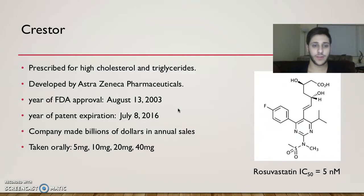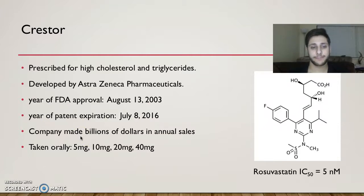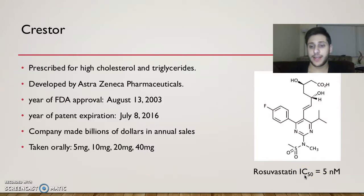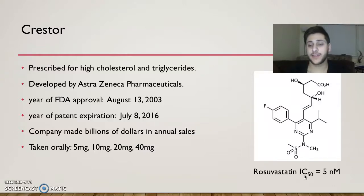The company, as you can imagine, made billions of dollars in annual sales. Crestor is taken orally in doses of 5, 10, 20, and 40 mg. It has an IC50 value of 5 nanomolar — the IC50 value is the concentration of the drug when 50% of the targets are inhibited, and the lower the better. Rosuvastatin has the lowest IC50 out of all the statins, which shows how effective it is.